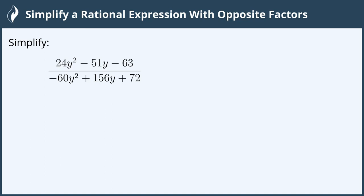Hi everyone! In this video we will simplify a rational expression with opposite factors. Simplify 24y squared minus 51y minus 63, all divided by negative 60y squared plus 156y plus 72.